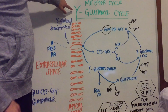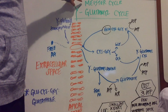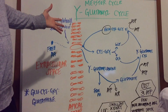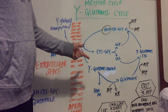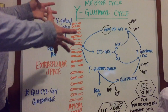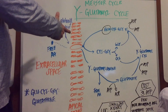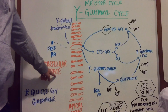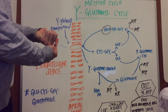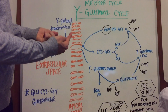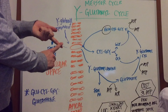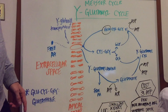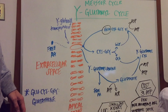I'm going to be talking about the Gamma-Glutamyl Cycle, also called the Meister Cycle. It occurs in three main locations in the body: the small intestine, the kidneys, and the liver. Its main function is to maximize the absorption of amino acids from the extracellular space — within the glomerular filtrate and the proximal tubule lumen — and it's also for xenobiotic detoxification, which primarily occurs in the liver.